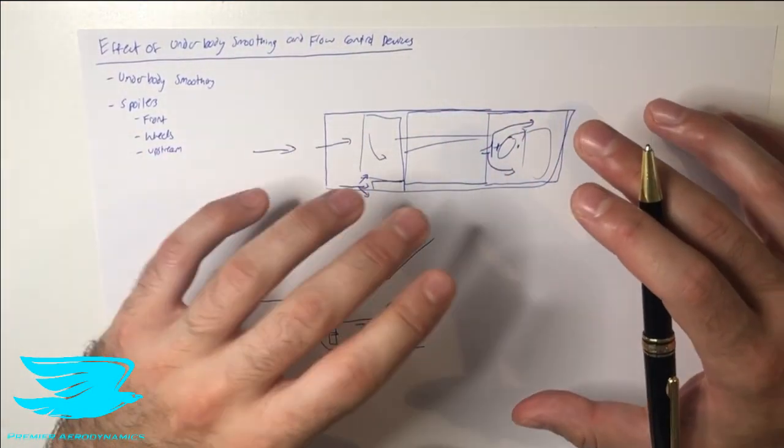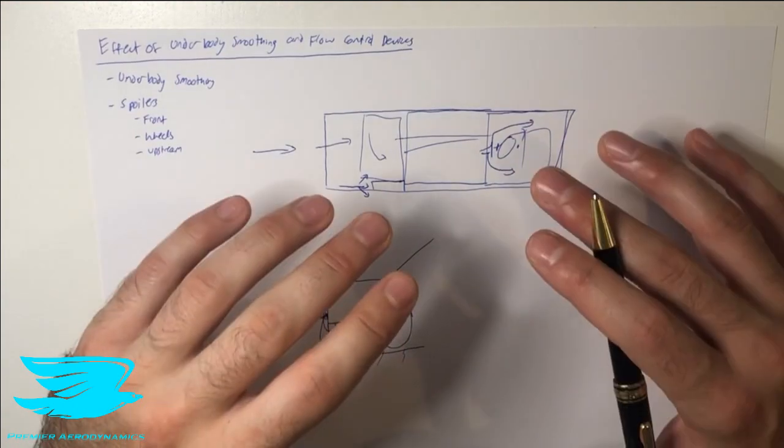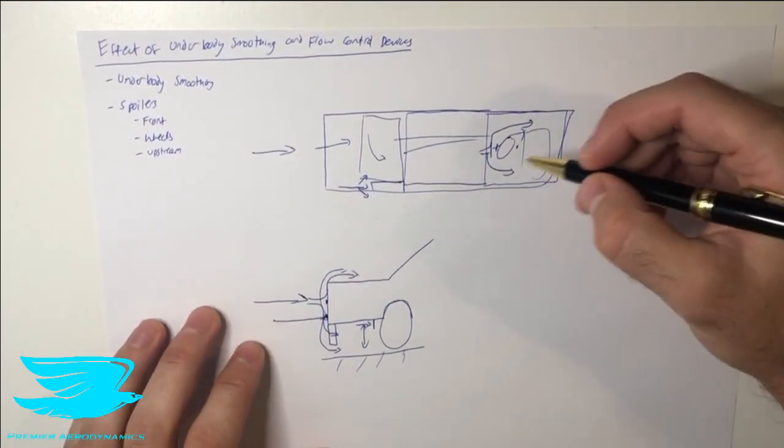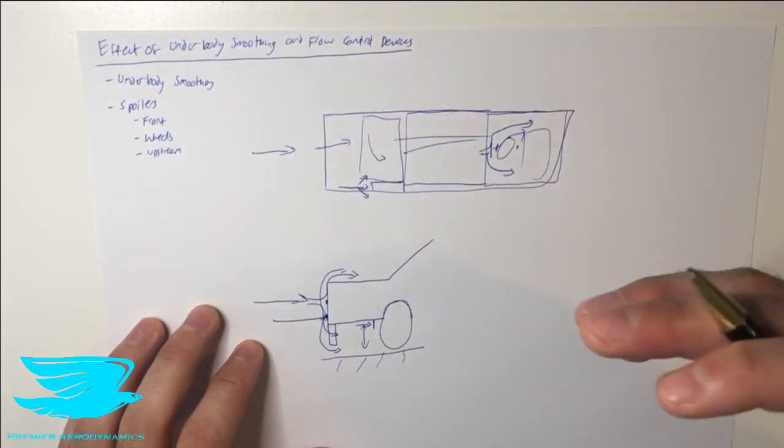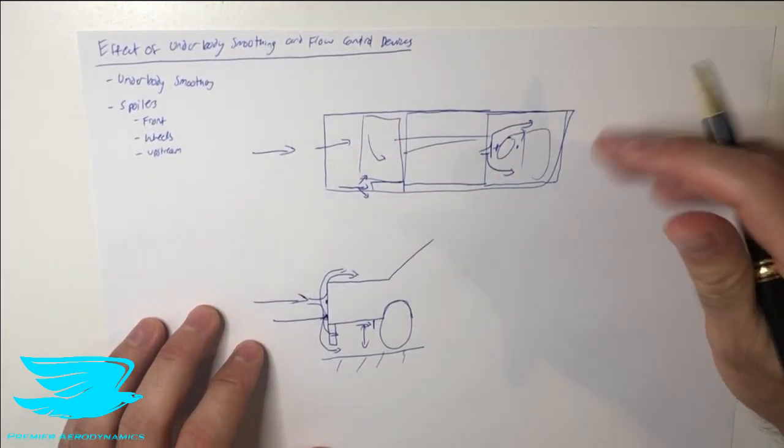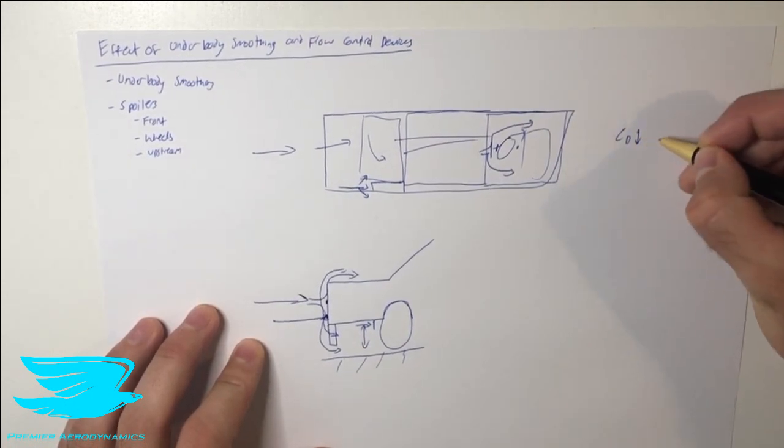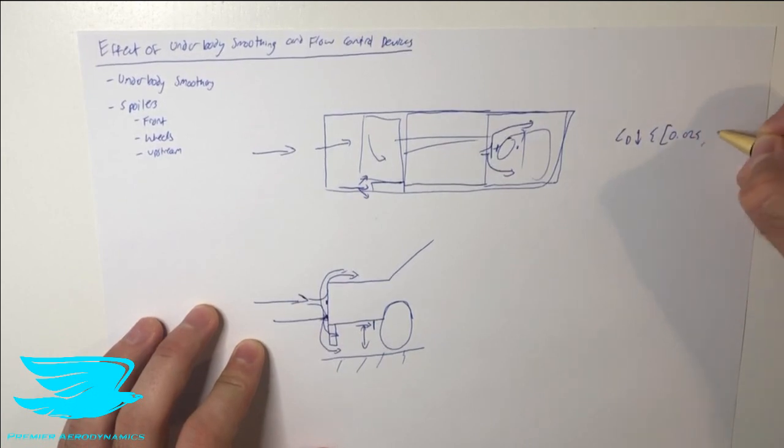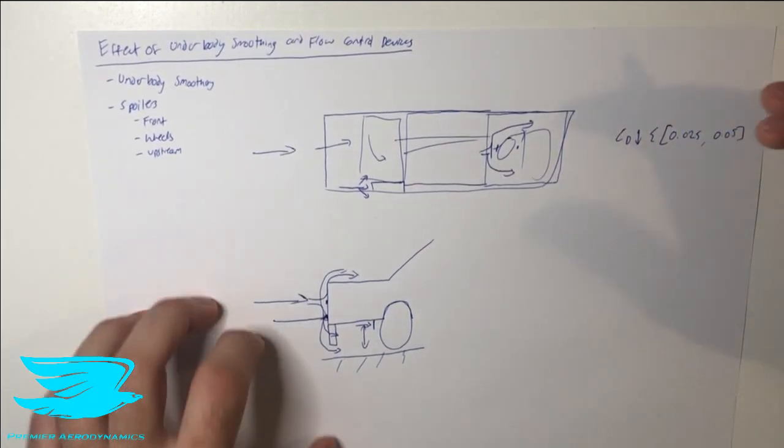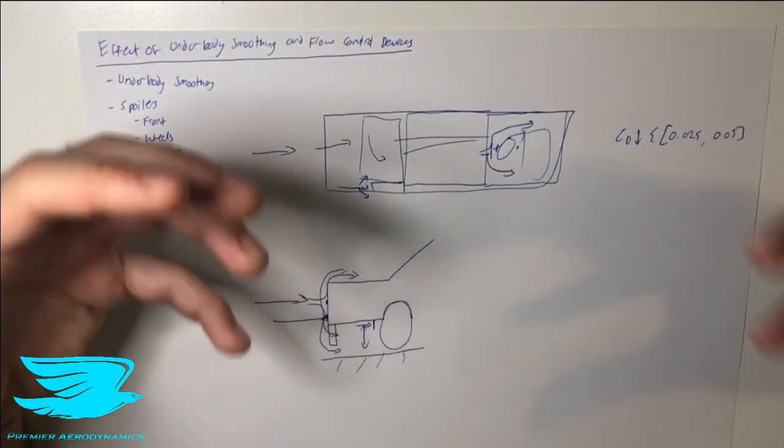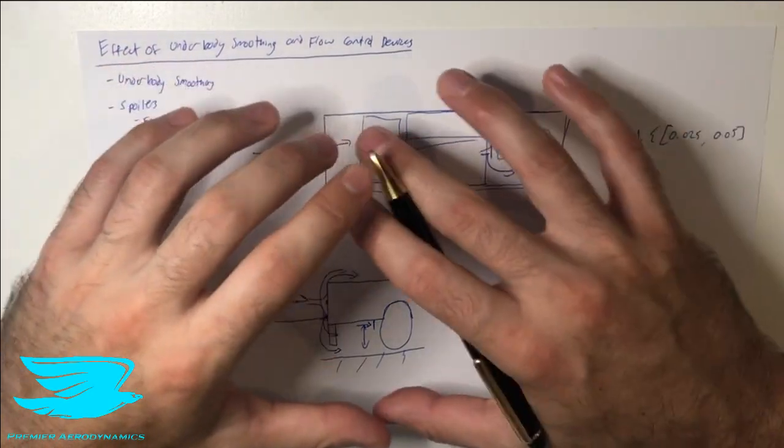With the underbody, in terms of smoothing, this is often giving us the best reduction in drag. For example, if we were to use a completely rough underbody, so no covers at all, and then we put smoothing covers on there, we can expect a drag reduction of about between 0.025 and 0.05. In other words, 25 counts to 50 counts, which makes up like 10 to 20% of a vehicle's drag. So that's a massive reduction just by covering the underbody.